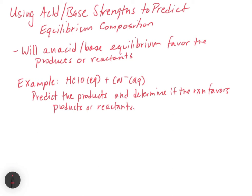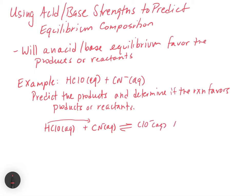The first example we're going to look at is the case where HClO reacts with CN⁻ in water. We need to predict the products and determine if the reaction favors products or reactants. So we have HClO aqueous and CN⁻ aqueous. Normally, you would do your proton transfer where HClO gives a proton to the CN⁻.